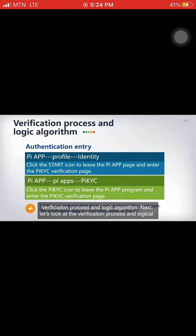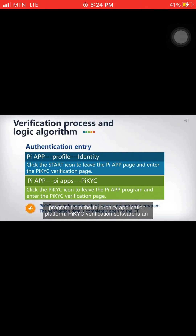Let's look at the verification process and logical algorithm. There are two authentication portals: one is to enter the authentication program from profile, and the other is to enter from a third-party application platform. PI KYC verification software is an independent third-party verification authentication program, and the verification data is completely open to the core team.